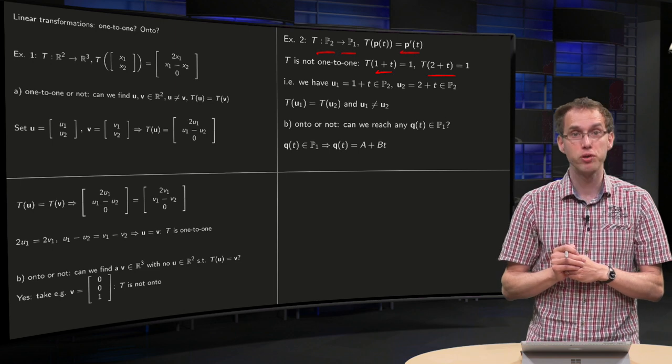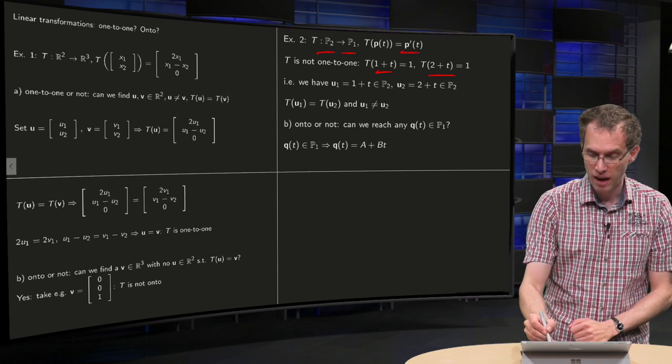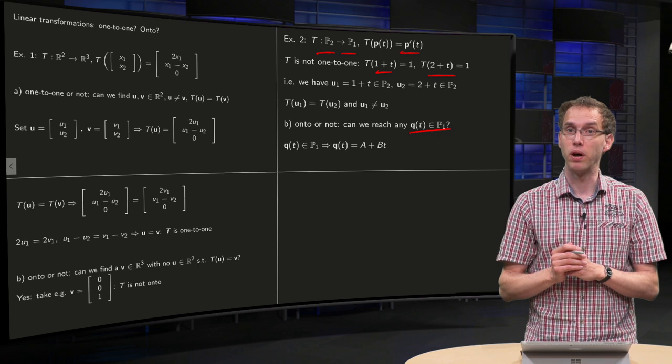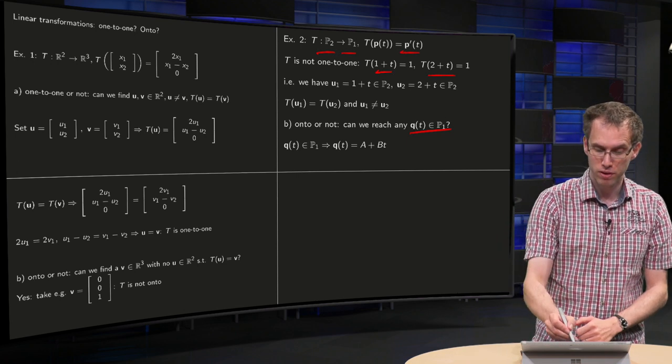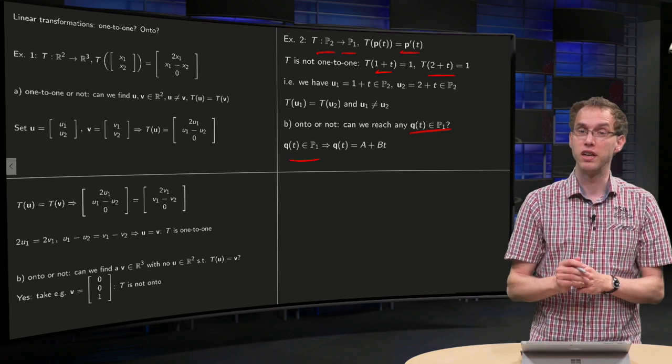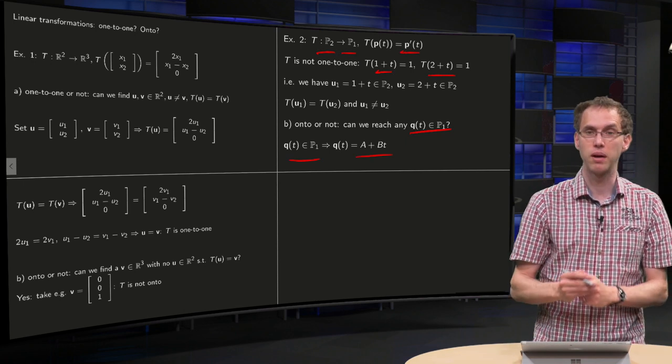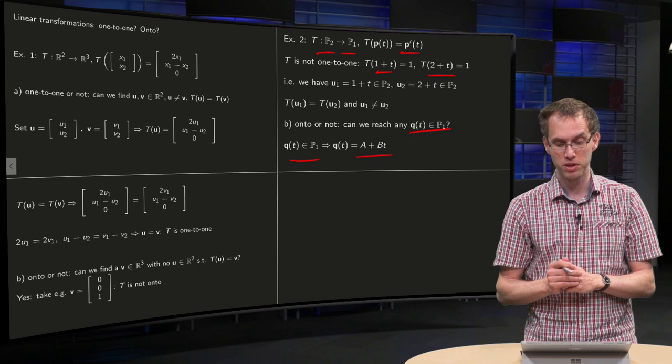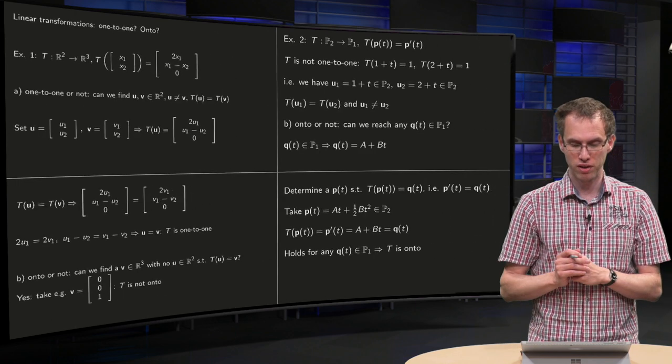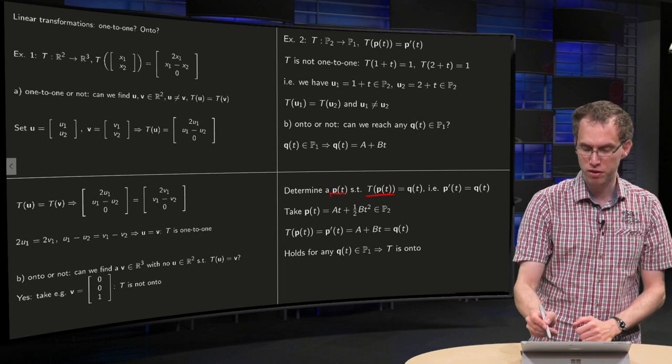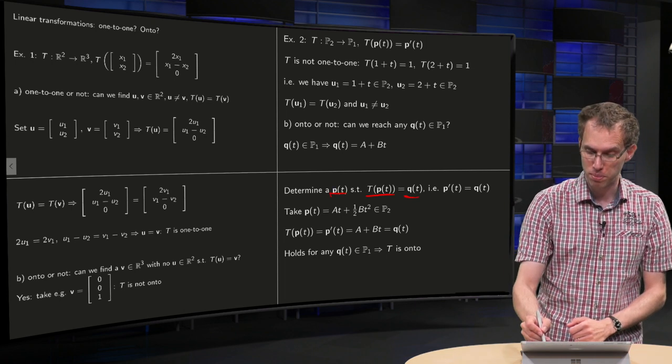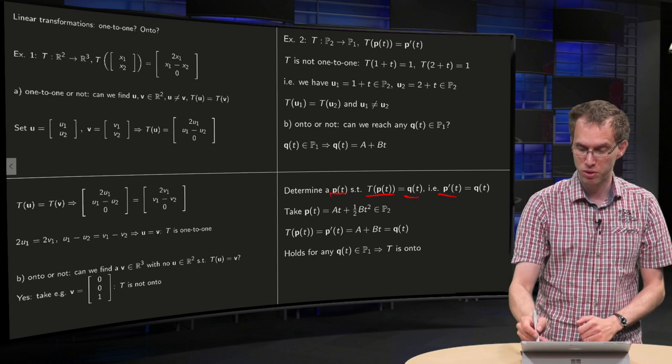Now, question about onto. Can we reach any q in P₁? If q is in P₁, then we know it's a linear polynomial, so you can write it as A plus B times t. Can we reach that? Can we find a p such that the image of p equals q? The image of p equals p prime, so p prime has to be equal to q.